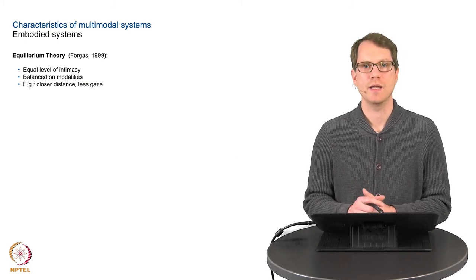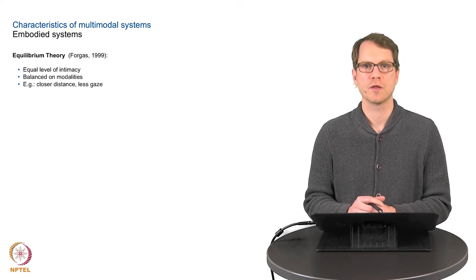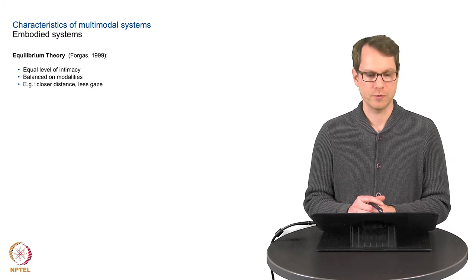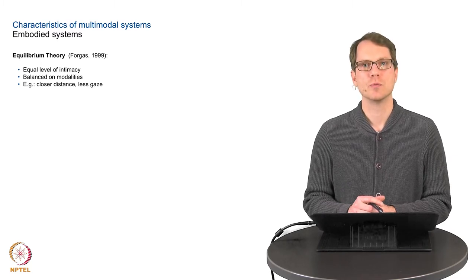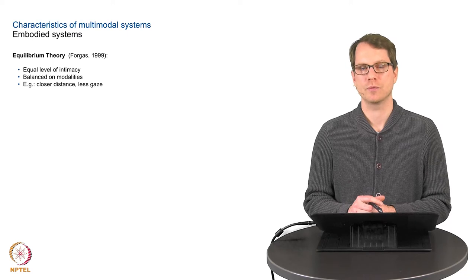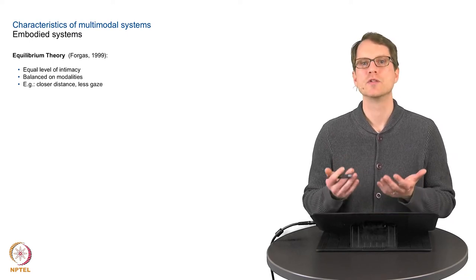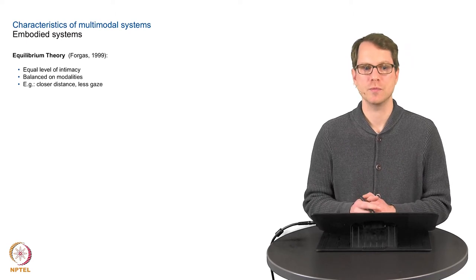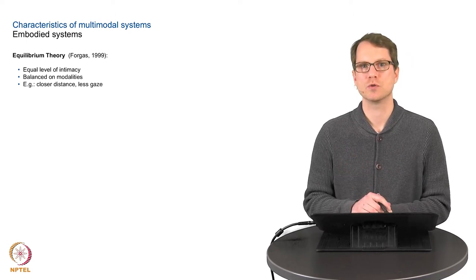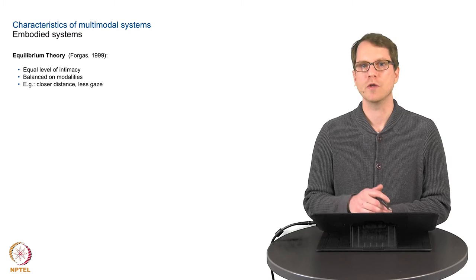The same holds for the last effect I want to present today. This is the equilibrium theory and it's also observed for social-human interaction. The whole idea is that we have this signal of intimacy, of the level of intimacy—how is the relationship between people. If we are more intimate,